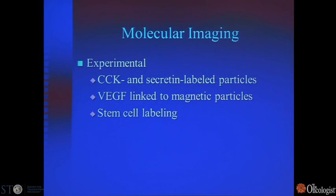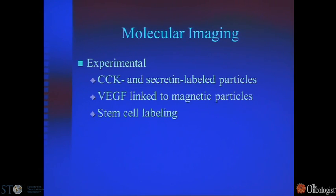Experimentally, SPIO particles are very useful because many entities — including antibodies — can be labeled with them. These particles can be labeled with CCK, secretin, or VEGF. Alternatively, they can be injected into cells, and using MR microscopy, the migration of those cells can be tracked over time.